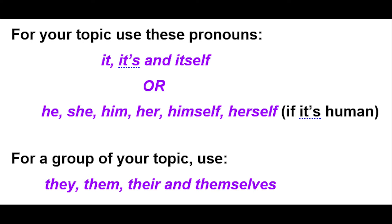If your topic that you're writing about is a person, you don't want to call your person 'it' — that's a little bit rude. You're going to use a pronoun like 'he,' 'she,' 'him,' 'her,' 'himself,' or 'herself.' But what if you need to talk about more than one of them? Well, you use a group pronoun like 'they,' 'them,' 'their,' and 'themselves.'